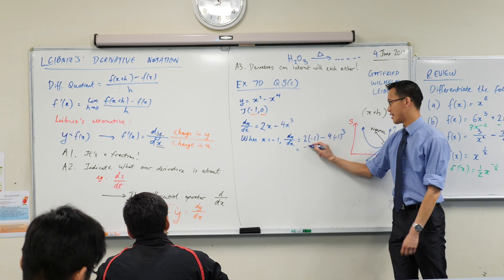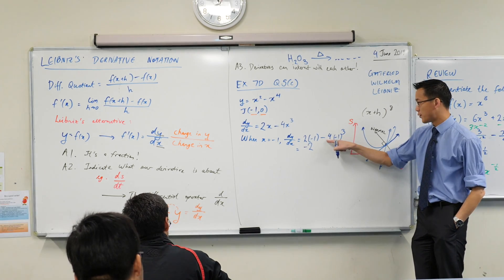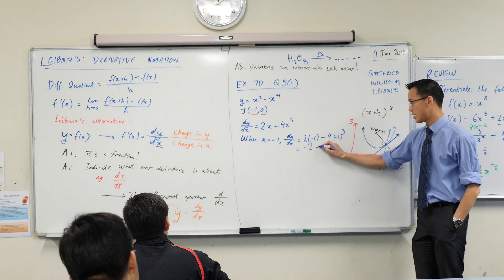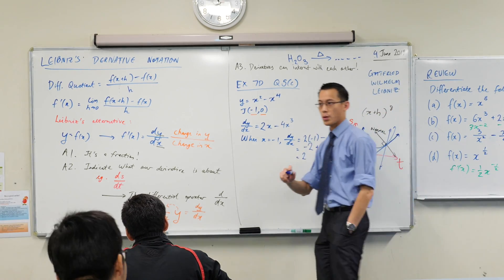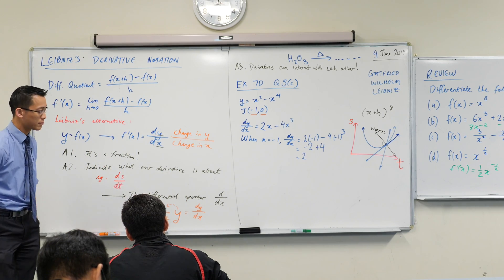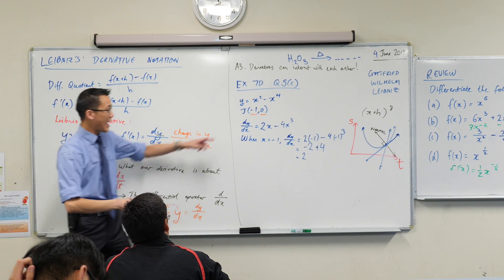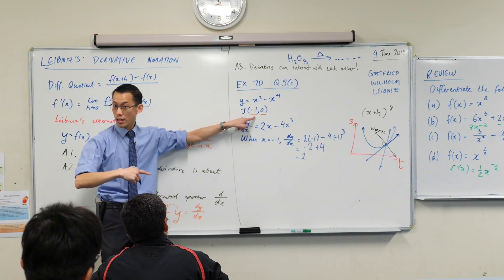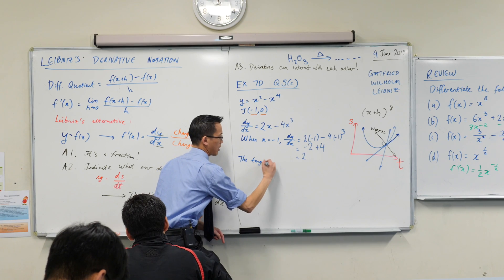Now I've written it down. Two times negative 1 is negative 2. This next bit here, this is going to be minus 4 times negative 1, which is, as Raston said, plus 4. And I've got an answer. What do I do with this thing, this number 2? That's the gradient, right? The gradient at this point will be 2. So now all I need to say is, the tangent is, because that's the thing I'm working out now.